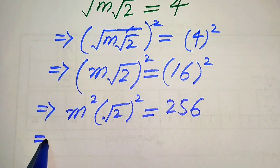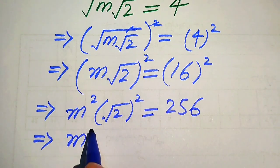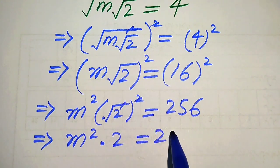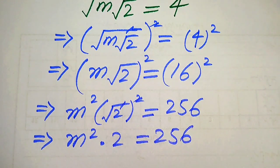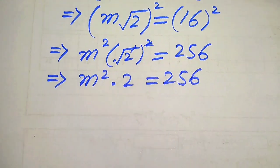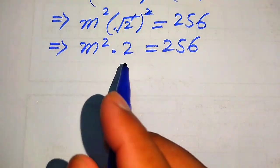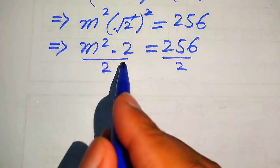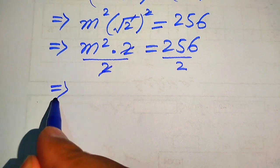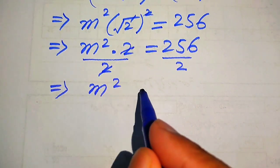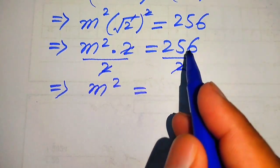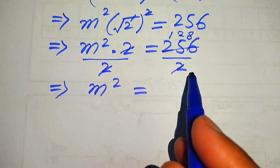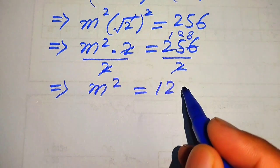We know that 16 squared is 256. On the left hand side we have m squared times 2, and the square root is gone, giving us 2m² equals 256. In the next step we move this 2 to the right hand side by dividing both sides by 2. The 2's cancel and we get m² equals 128.